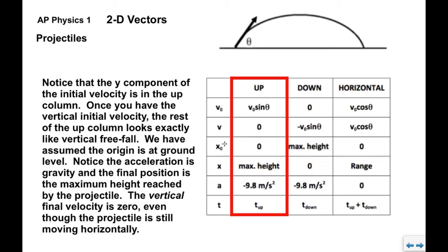We've assumed the origin is at ground level, so x-naught is zero, and the maximum height reached by the projectile is what goes in the final position column — the up column ends at the highest point. The acceleration is gravity: negative 9.8 meters per second squared. The final vertical velocity at that highest point is zero — even though the projectile is still moving horizontally, it is not moving up or down at that moment. We would typically use kinematics to solve for the maximum height and the time to reach the highest point.